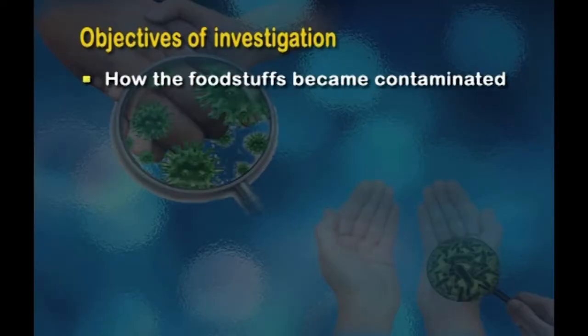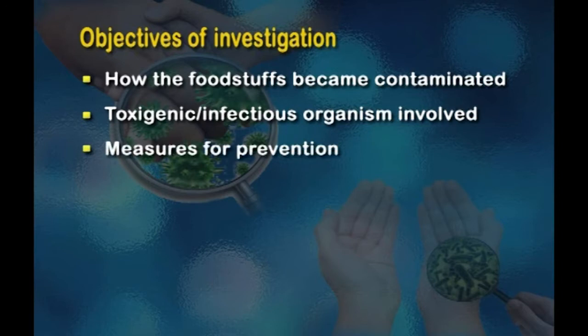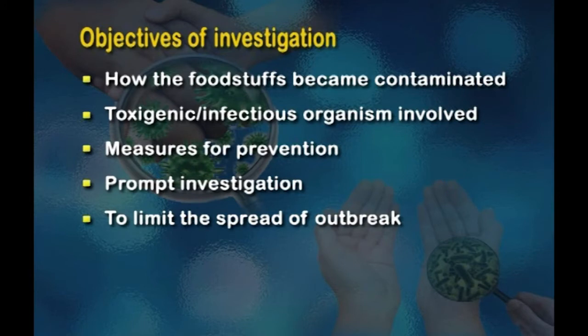Moving on to investigation of a food-borne disease outbreak. Sometimes there are episodes of gastroenteritis, typhoid, jaundice, or cholera breaking out. Whenever there is an outbreak of food-borne diseases, an investigation is carried out to find out why the outbreak occurred, what the source is, and how it can be prevented in the future. The objectives are to determine how foodstuffs became contaminated, whether any toxigenic or infectious organism was involved, how the growth of this organism occurred, and what measures should be taken to prevent a repetition.